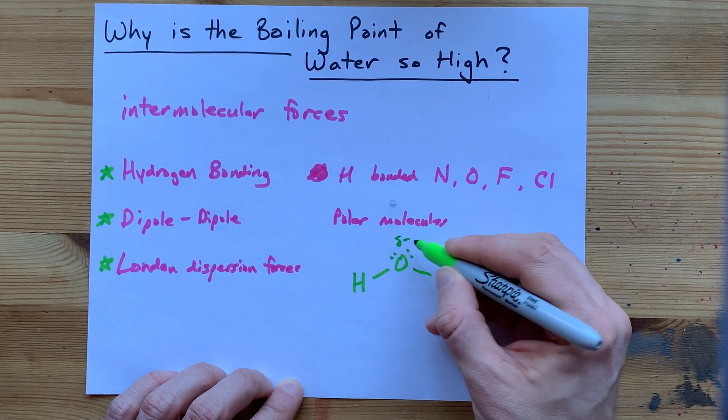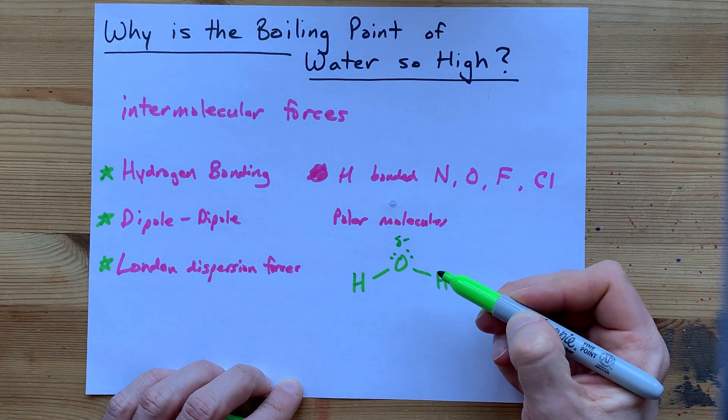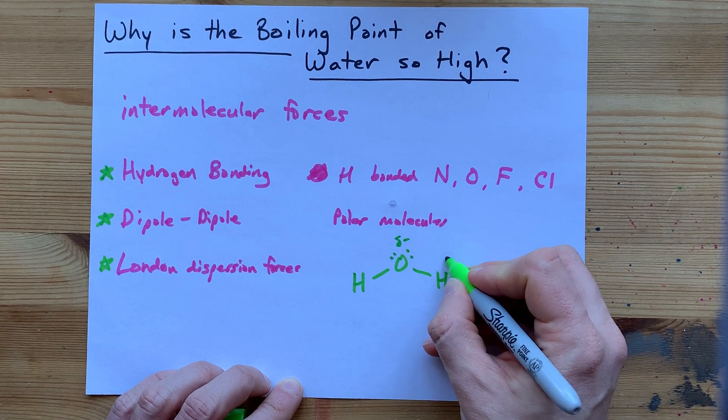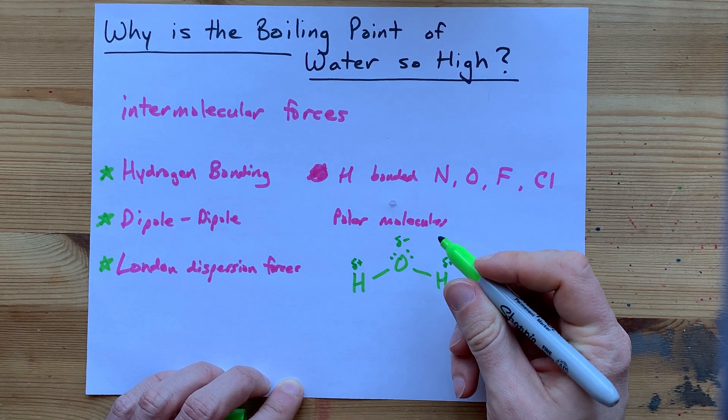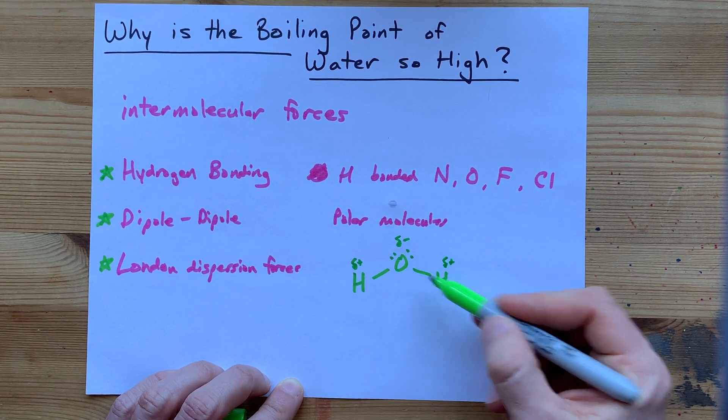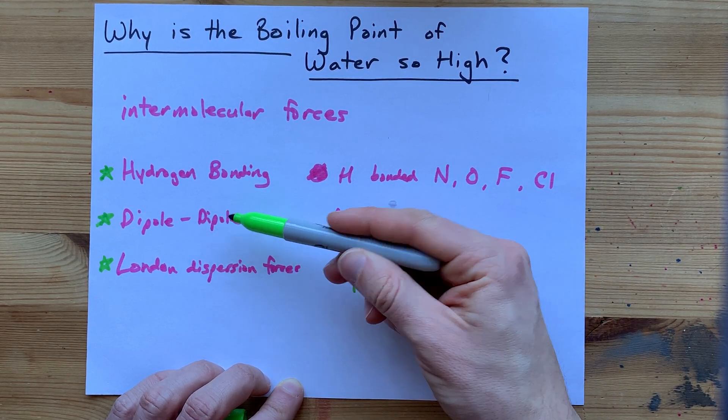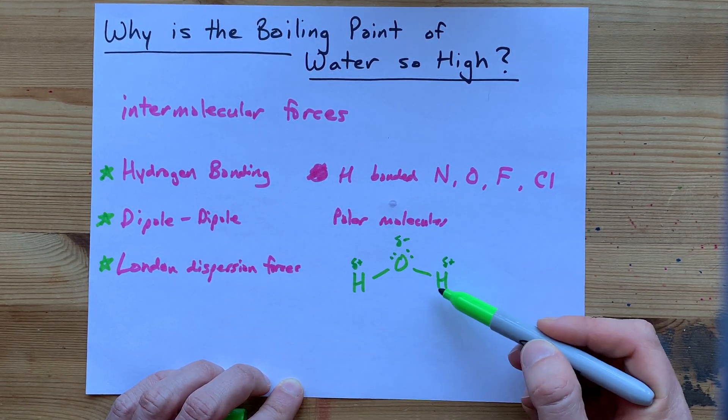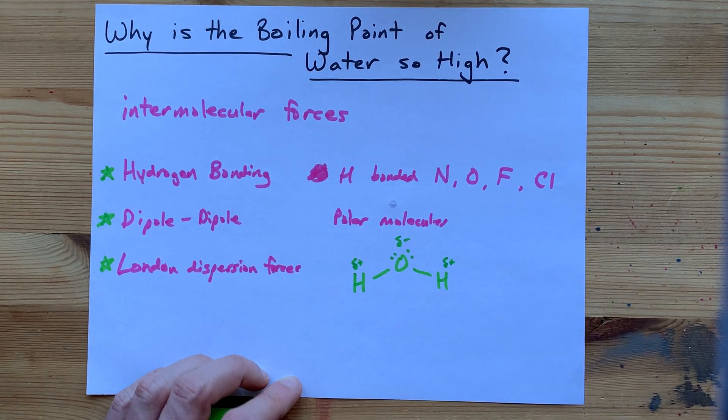It's not a full minus 1 plus 1 charge or anything, so the way that we show it is with a little tiny delta minus. That's the lowercase delta in Greek. Little tiny delta plus here, little tiny delta plus here. What I'm actually almost on the way to showing here is a dipole. But it's such a strong dipole that we can call it hydrogen bonding.